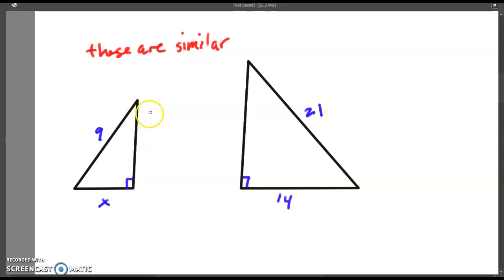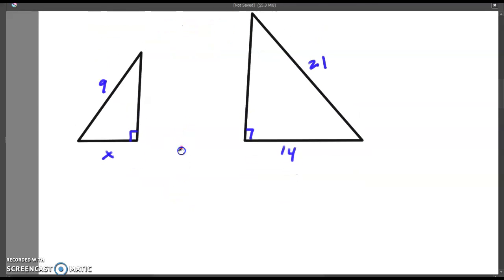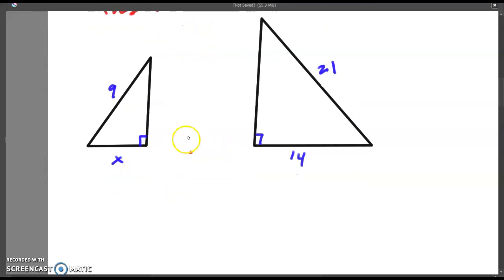So if you are told that these two triangles are similar, you're going to notice that you can use that exact same proportion that we did before to figure out the missing value. We're going to set it up just the way that we did before, as long as we maintain the sides that match up with each other.